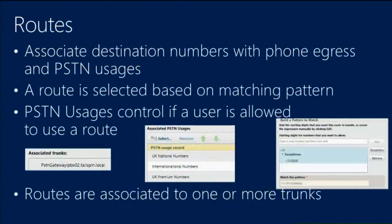A route is a regular expression that looks at a number; if the number matches, this route can be chosen for that call. The route is connected to a gateway. Per gateway you'll typically have multiple routes for different classes of service. For example, for an Austrian gateway I configure a national usage with a route matching only national Austrian numbers. For an international usage I create a second route covering international calls. This is how you control which routes are used in specific usages.